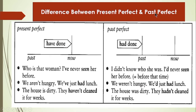Difference between present perfect and past perfect. In present perfect, the action starts in the past and comes to the present now. For example: 'Who is that woman? I have never seen her before.' 'We are not hungry — we have just had lunch.' 'The house is dirty — they haven't cleaned it for weeks.' The action comes to the present time. But in past perfect, the action begins in the past or before a past time, it passes through the past, and it ends in the past — it does not come to the present.